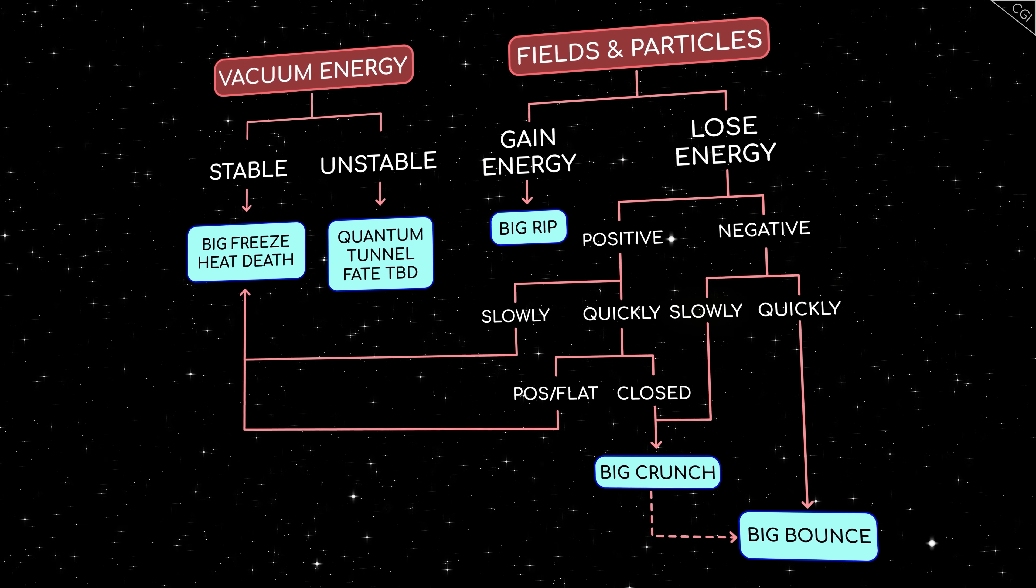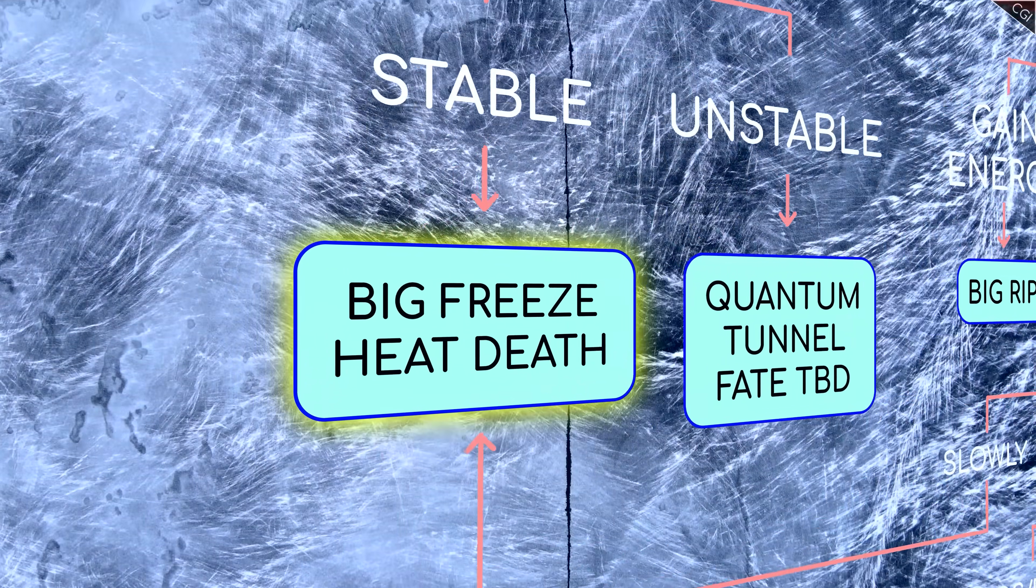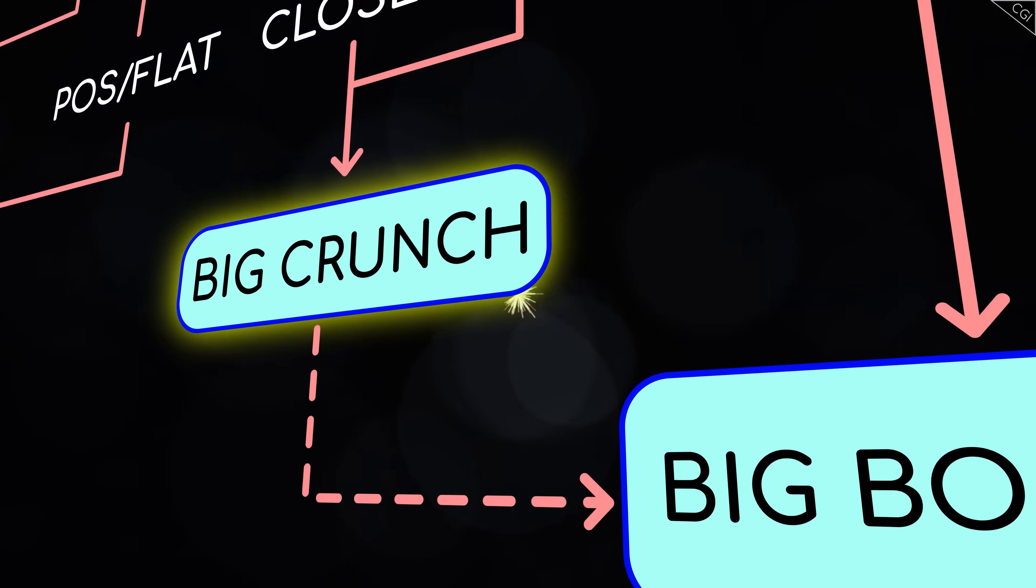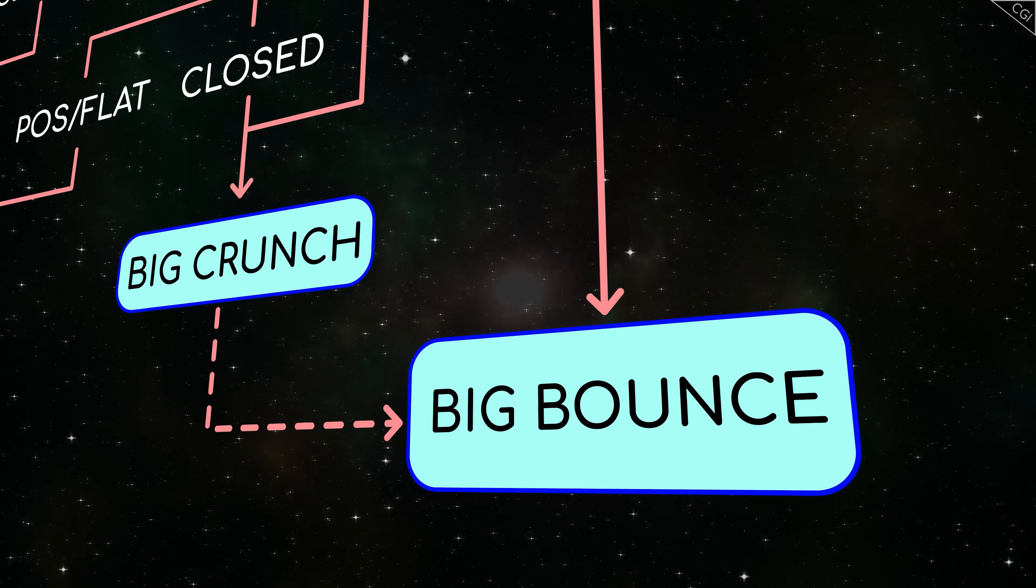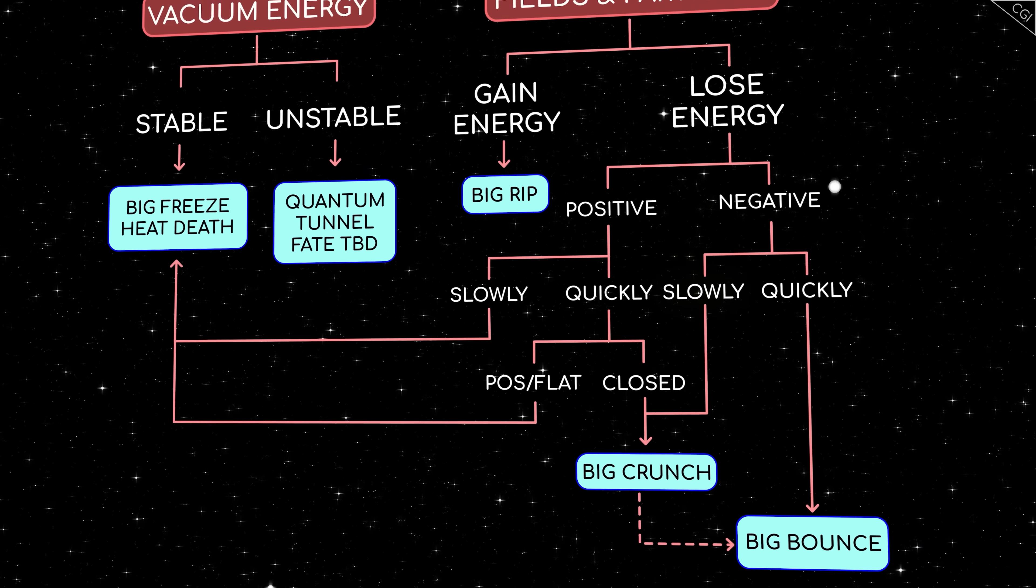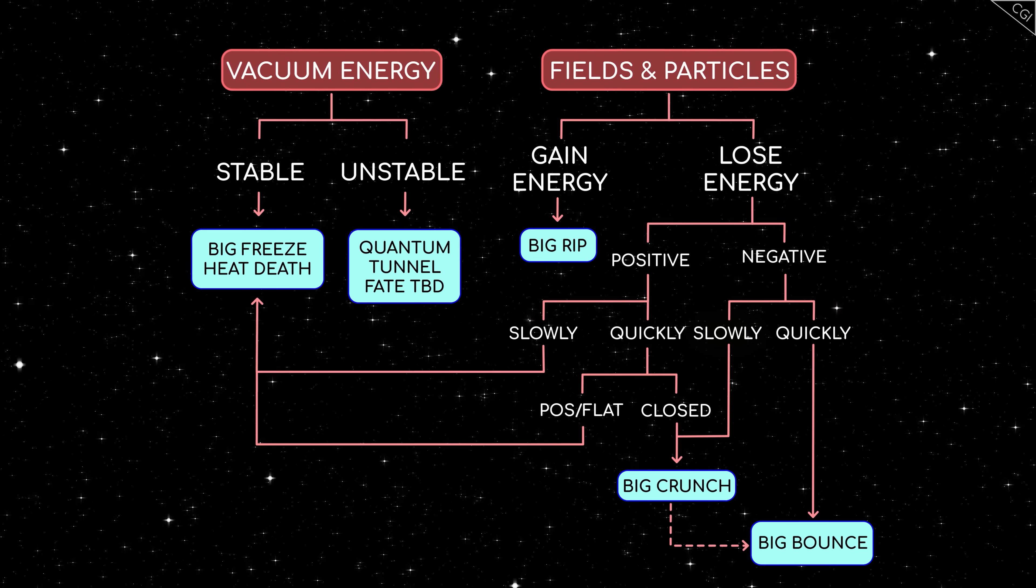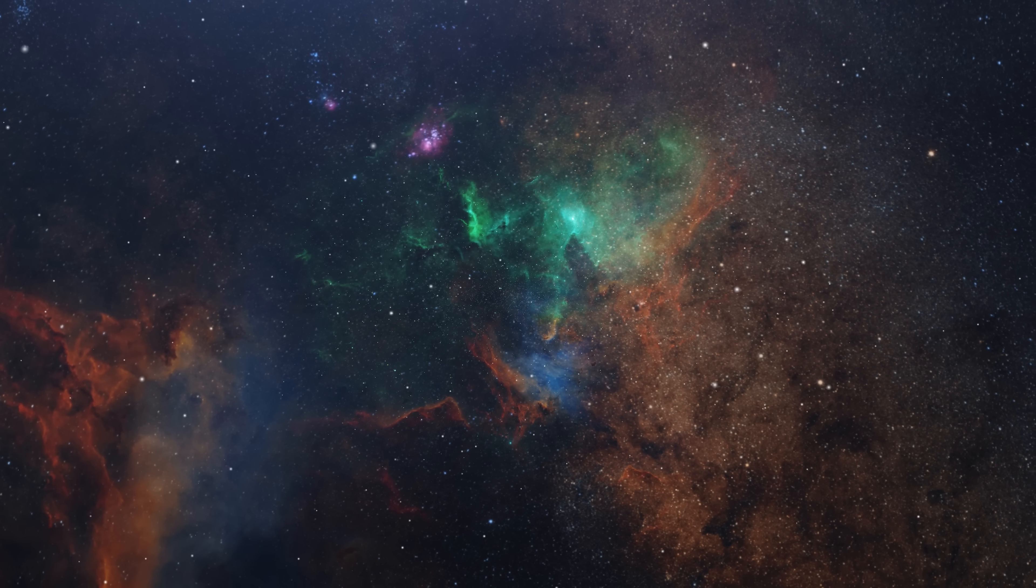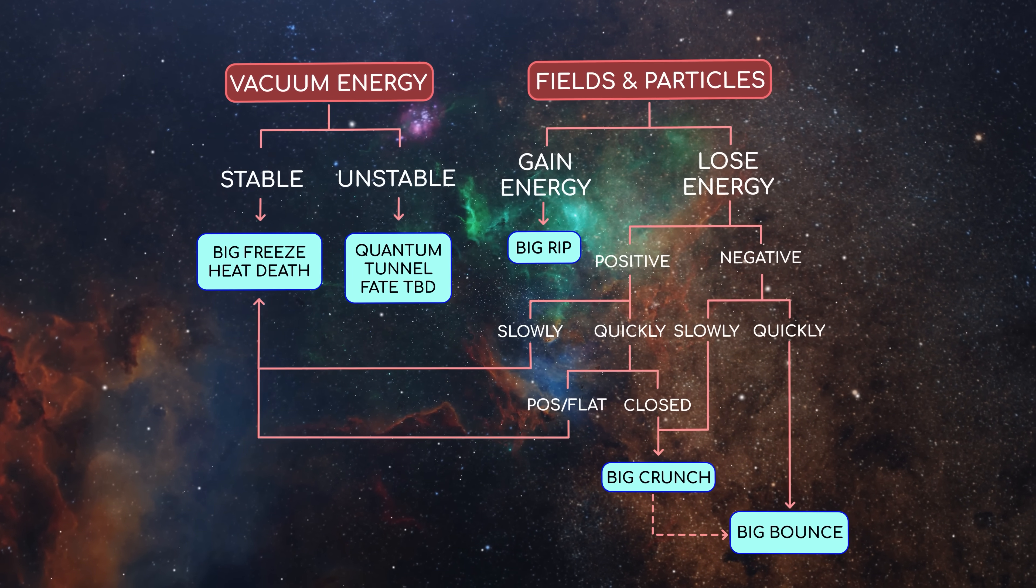This wraps up our master flowchart for all the different ways the universe could end. It could freeze to death, be ripped to shreds, be crushed to oblivion, or simply heat up so quickly that it bounces into a brand new life cycle. We might not have any certainty yet, but even just narrowing it down to 4 possible options is already an enormous feat of science. So, there's a great new topic for small talk with strangers and dinner conversations. You're welcome. If you had control over the fate of the universe, which of these 4 destinies would you pick for it? Let us know in the comments below.